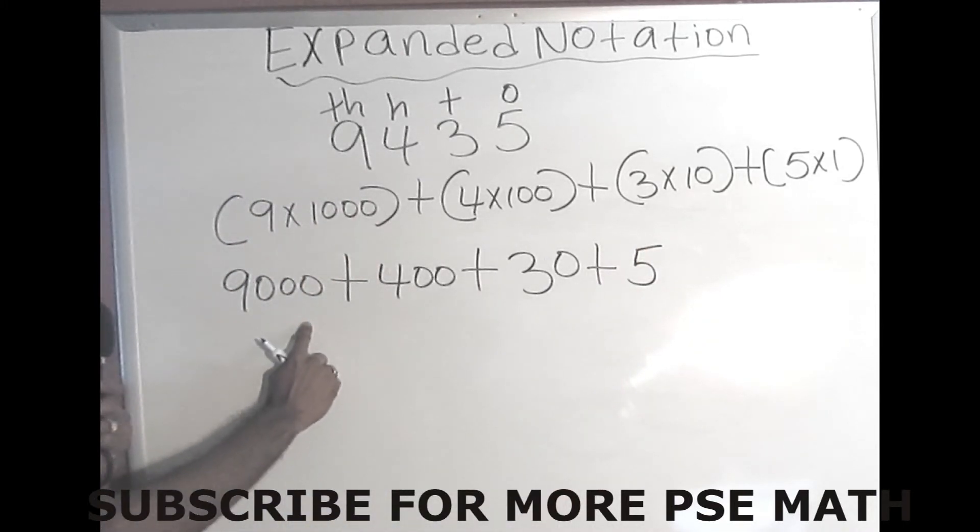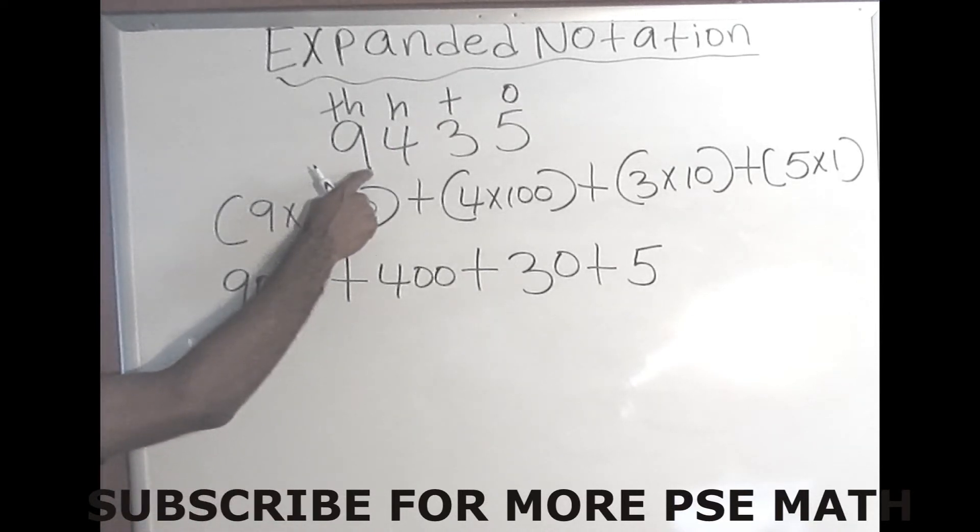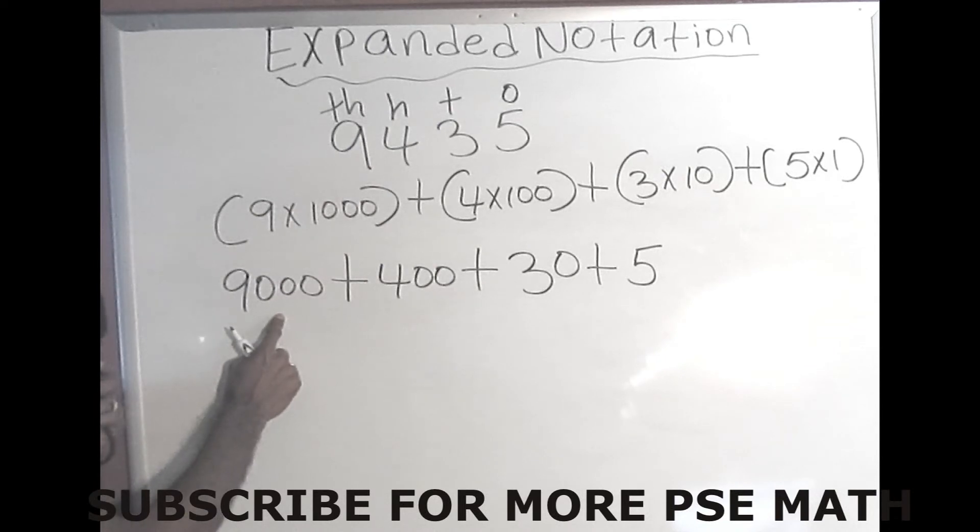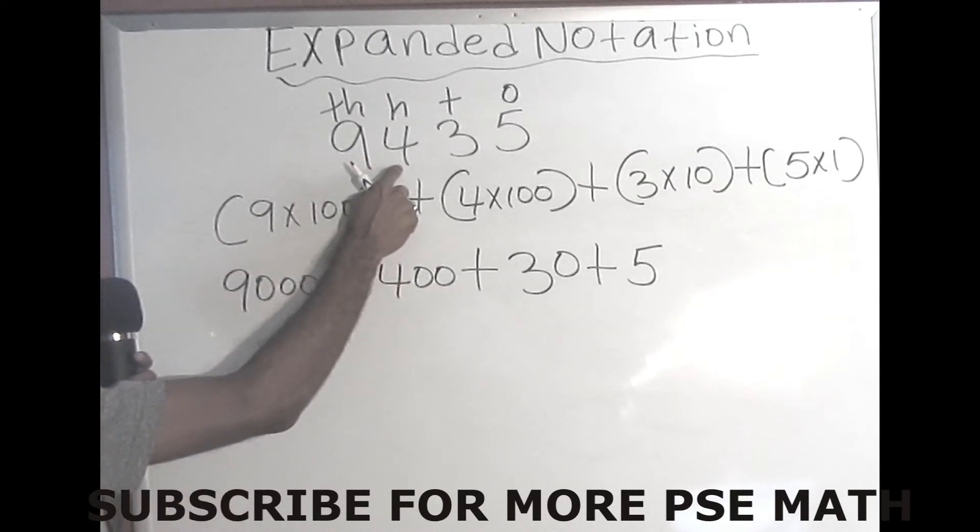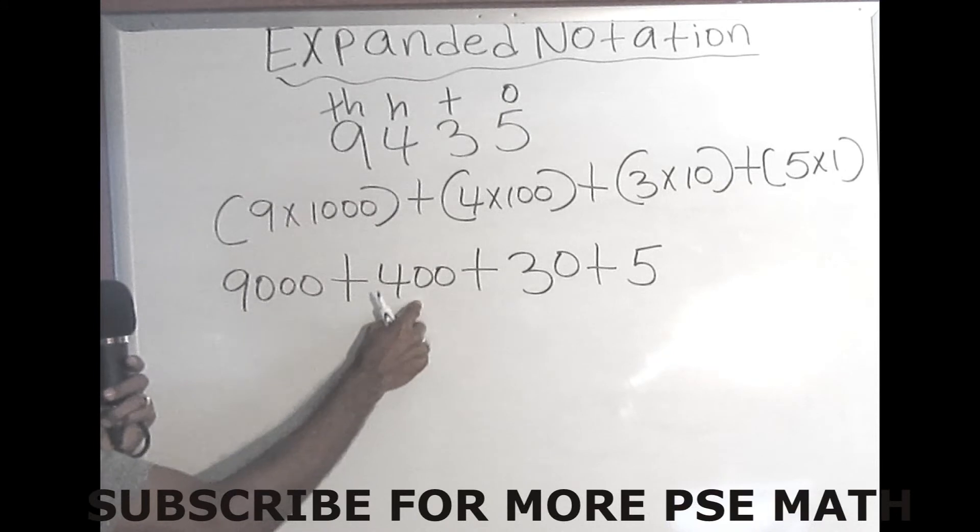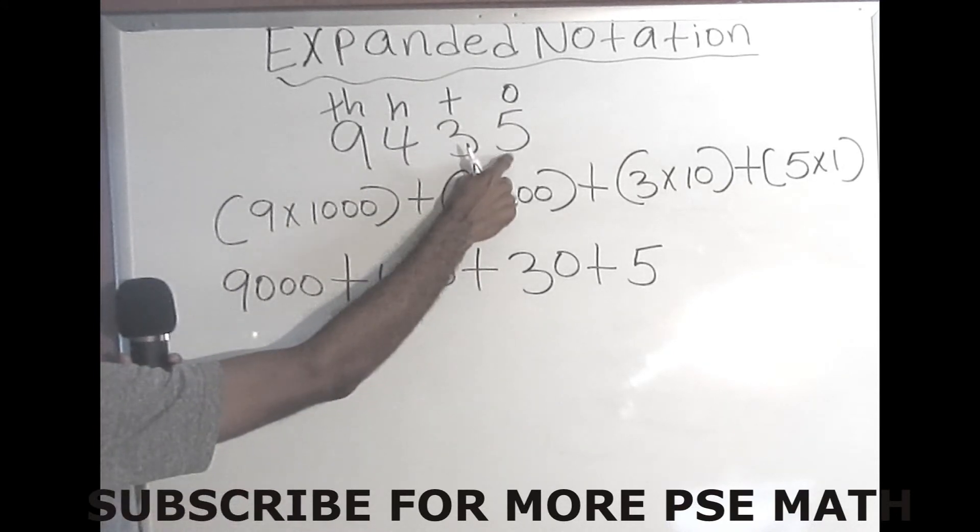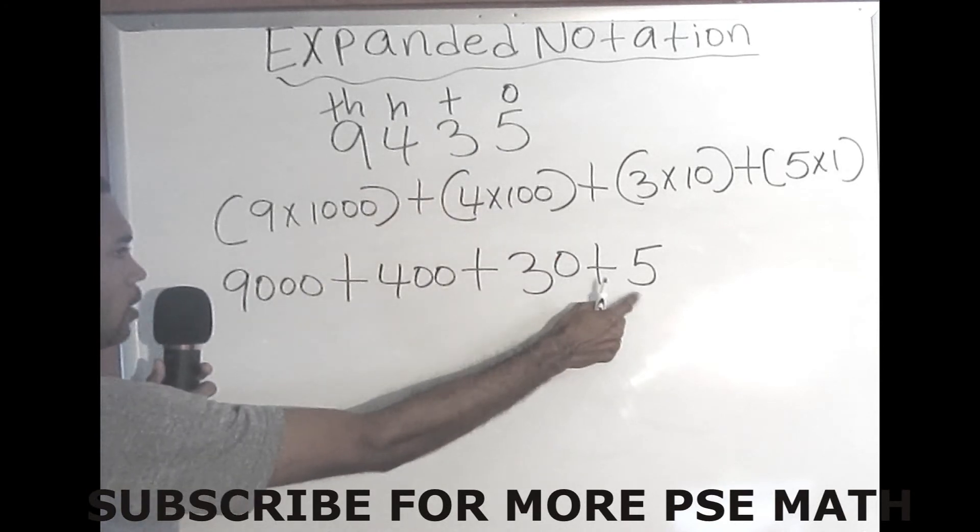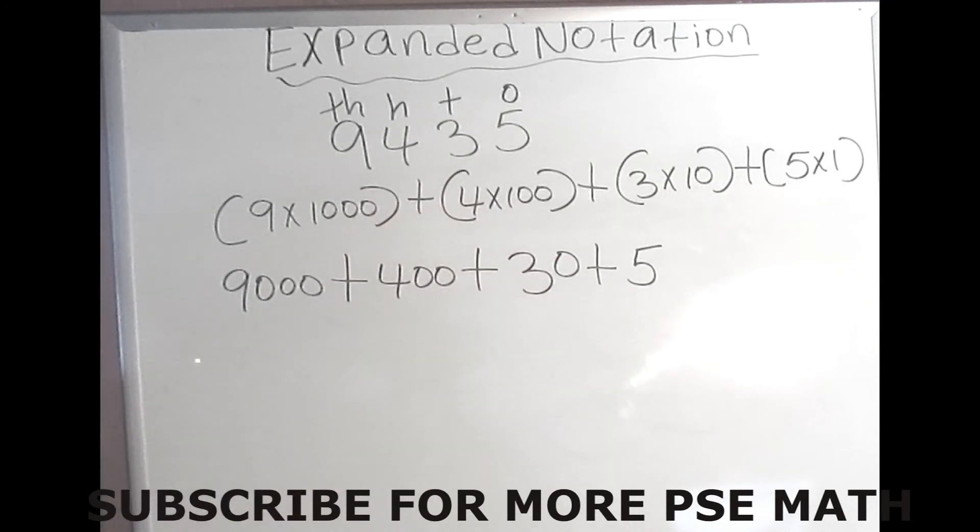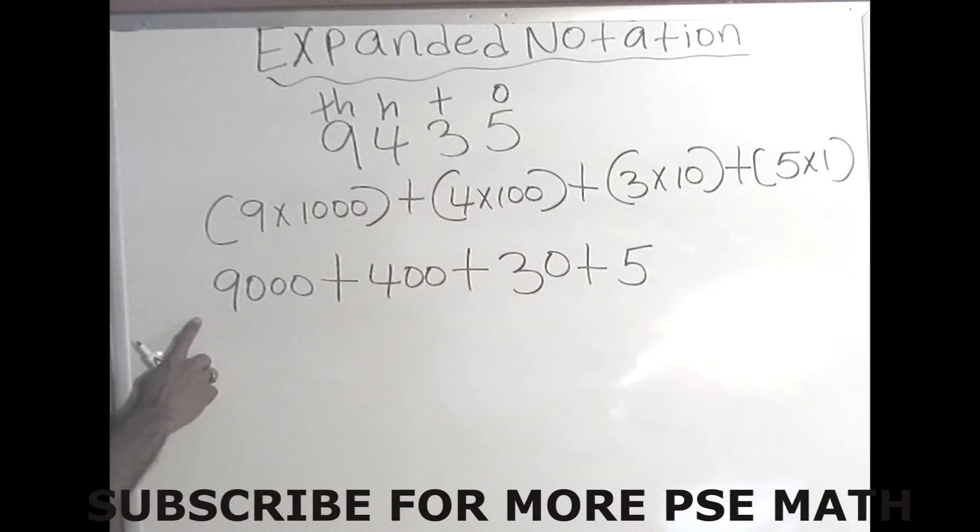So if you can see, this is the option that I usually see in the PSE paper 1. You just find the value, 9 is 9,000 plus. 4, the value is 400. Then the 3, which is 3 times 10, the value is 30. Plus 5, 5 times 1, the value is 5. So these are the two ways that we expand numbers.